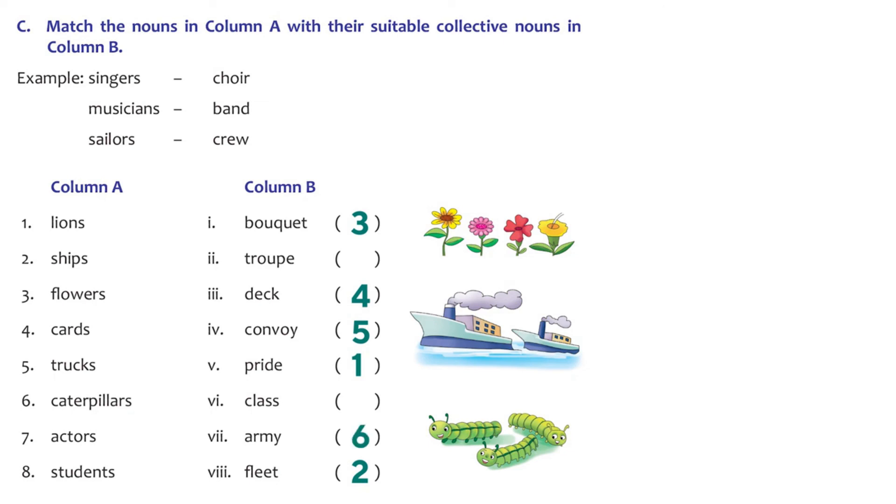Actors - a troop of actors. And the last one, students - that's very easy - a class of students. So this is how we can use collective nouns when we want to talk about a group of nouns. Next time when you see them, remember to use these words. Hope you all remember everything we learnt today. Have a nice time!